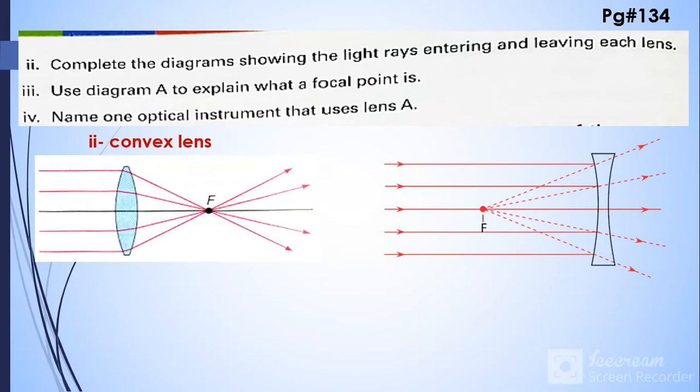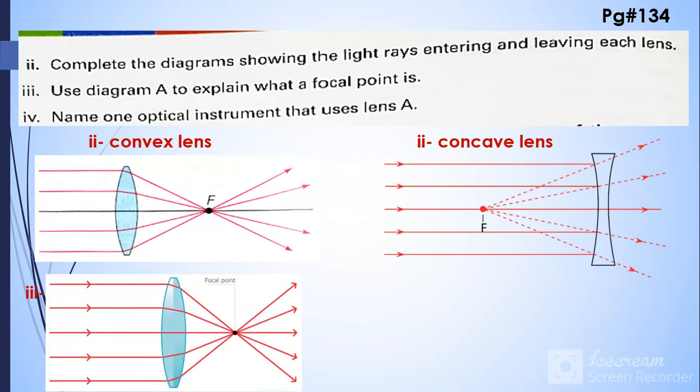Use the diagram A, explain what is a focal point. So this is a focal point where all the rays meet together, that is also called a focal point. Name one optical instrument that uses a lens. So a hand lens is using convex lens.